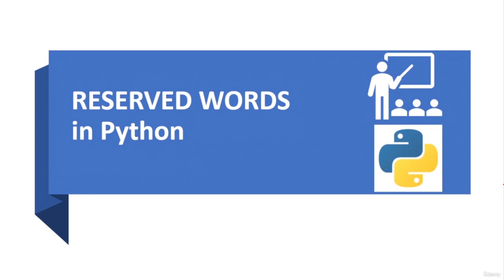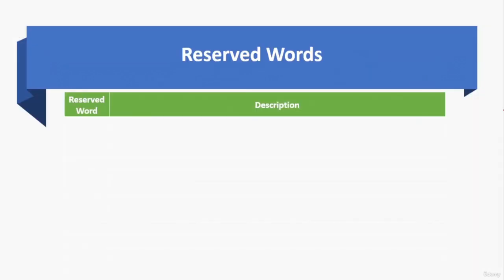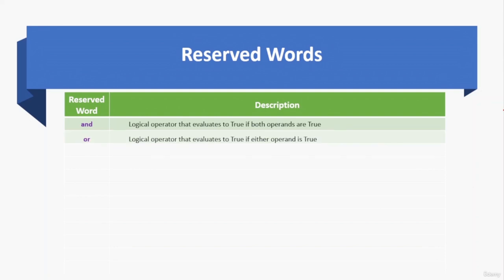Think of Python as a language you use to communicate with the computer — just like any other language, Python has its own set of words and grammar rules. Some words have specific meanings and purposes that are reserved for use by the language itself. Reserved words in Python are keywords that have special meanings and cannot be used as identifiers such as variable names or function names. 'and' is a logical operator that evaluates to true if both operands are true. 'or' is a logical operator that evaluates to true if either operand is true.